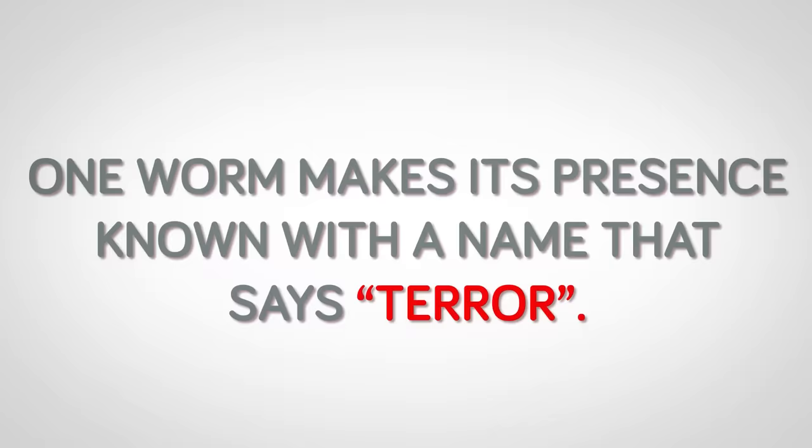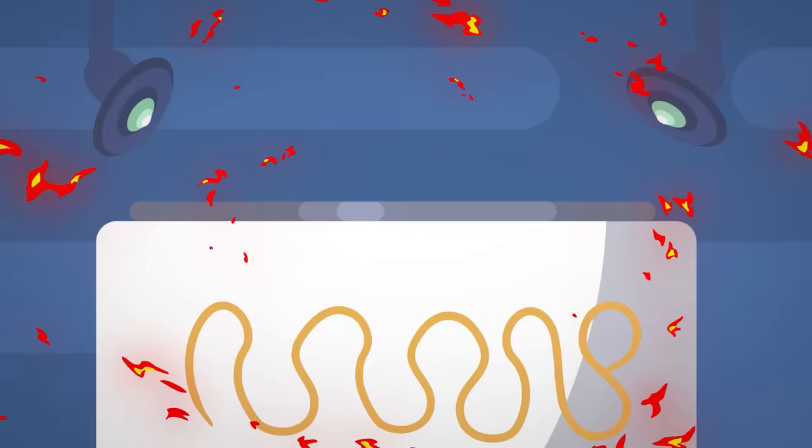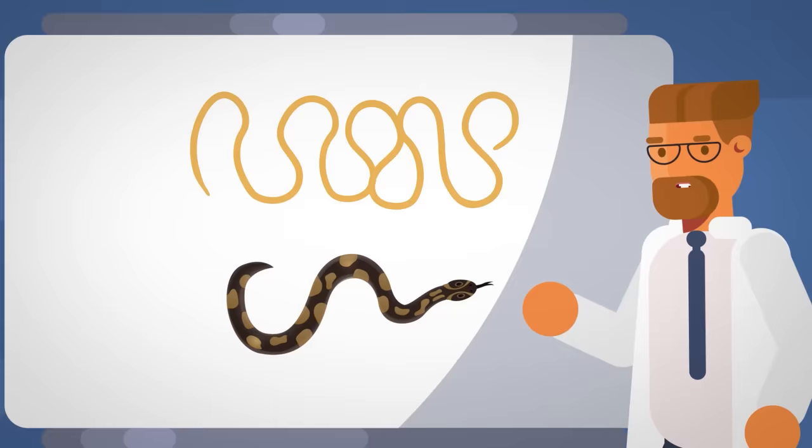Dracunculus medinensis, or the guinea worm, translated as little dragon of the Mediterranean. The proper name of the guinea worm gives away that this worm is a killer. The female worms are among the largest worms that can infect humans, growing up to 31 inches in length. Longer than many snakes as they slither around in the human gut. It is not surprising that they can cause excruciating pain.